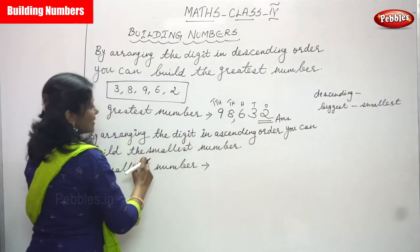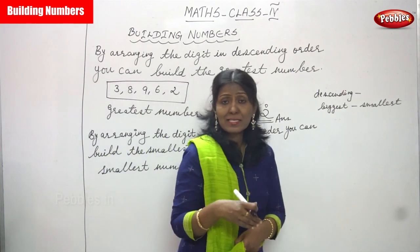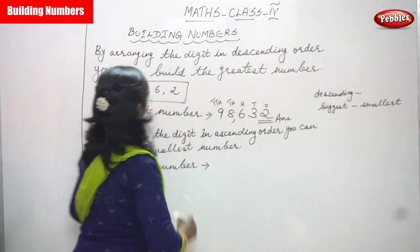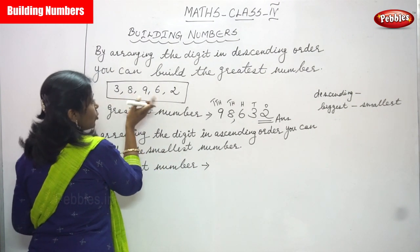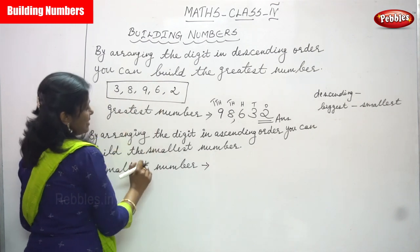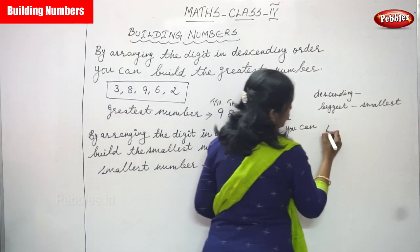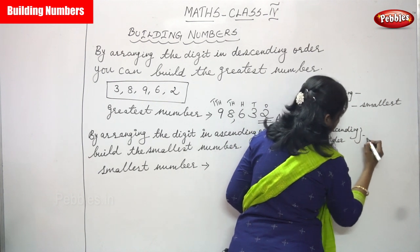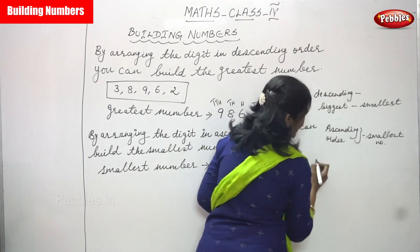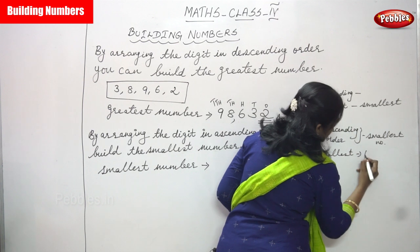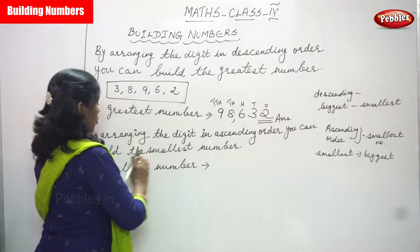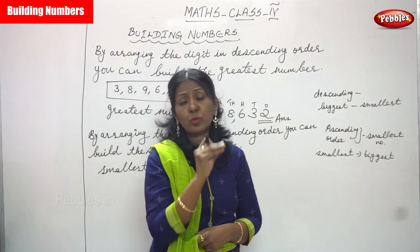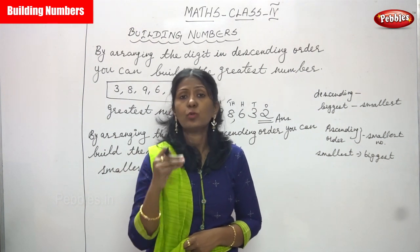Next question: by arranging the digits in ascending order, you can build the smallest number. While you go for the greatest number, use descending order. While you go for the smallest number, use ascending order. The same numbers given in the box are used. Ascending order means smallest to biggest — that is the rule to form the smallest number.